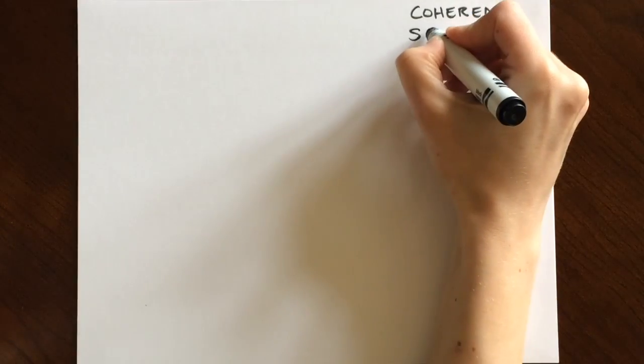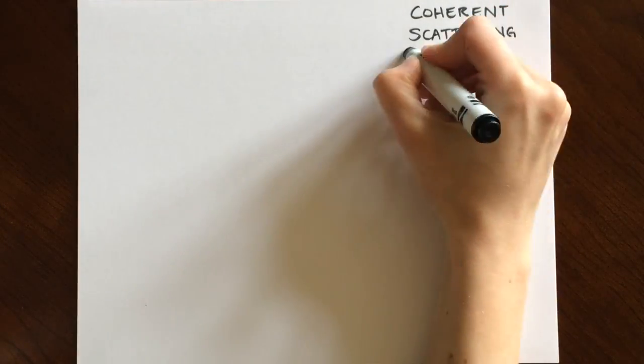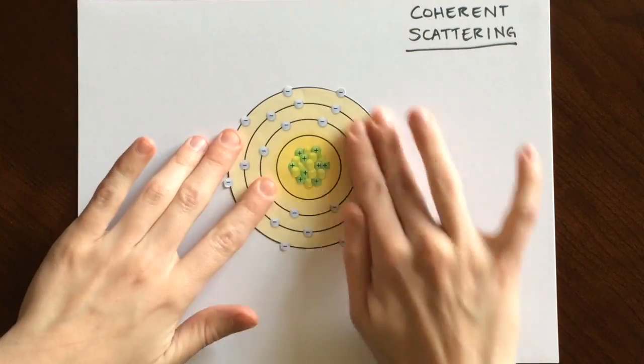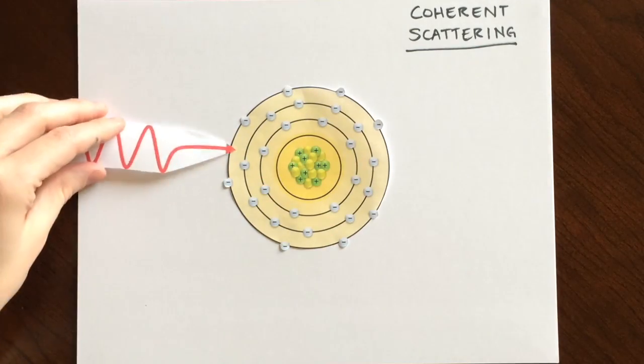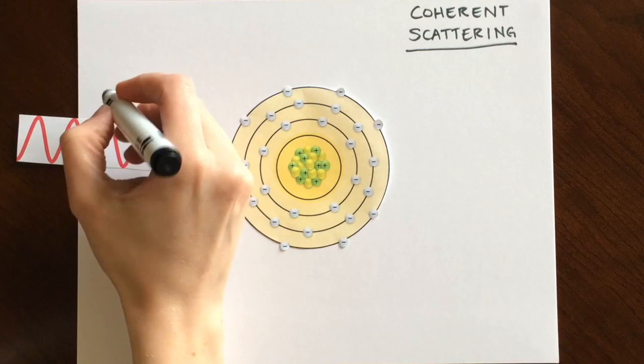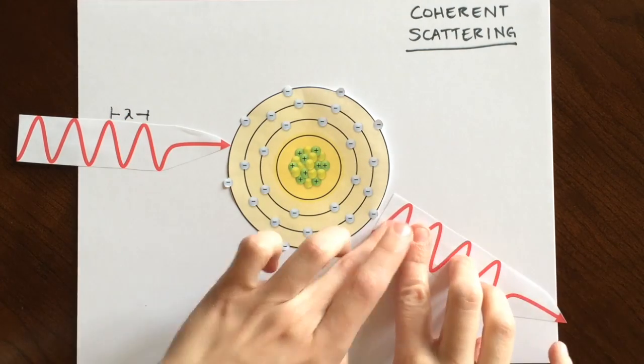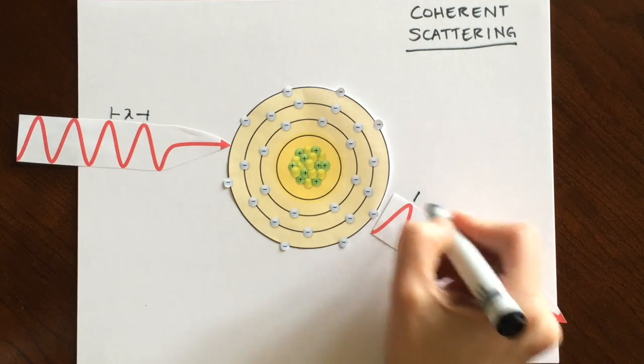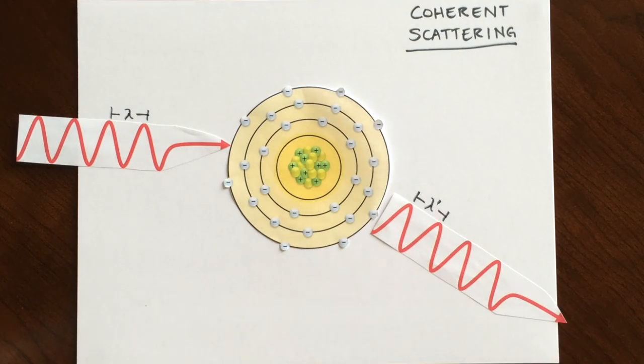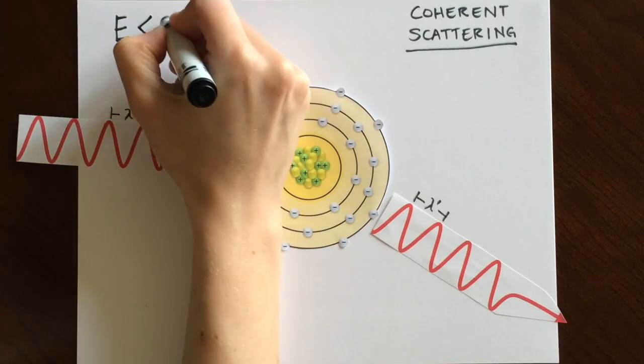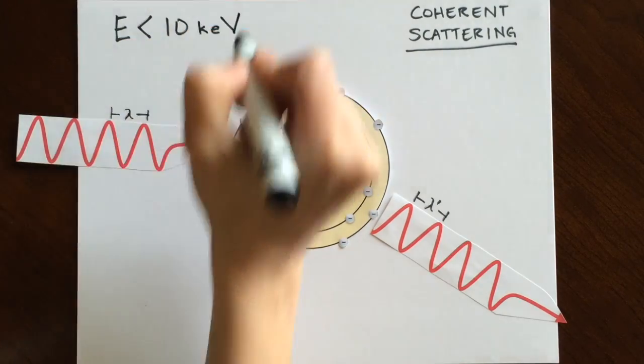In coherent scattering, an x-ray photon interacts with a whole atom and causes it to become excited. This excitation causes the atom to release an x-ray photon of equal wavelength, however it is now traveling in a different direction. Since the wavelengths are equal, there is no change in the energy level of the photon. This occurs when the photon has less than 10 kilo electron volts of energy.